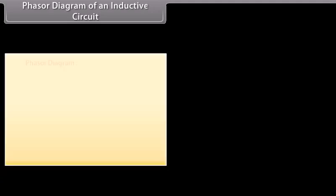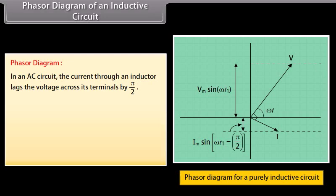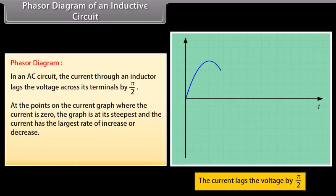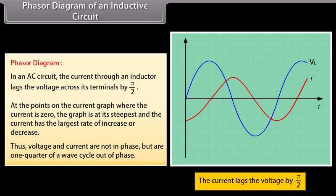Phasor diagram of an inductive circuit: In an AC circuit, the current through an inductor lags the voltage across its terminals by π/2. At the points on the current graph where the current is zero, the graph is at its steepest and the current has the largest rate of increase or decrease. Thus, voltage and current are not in phase but are one quarter of a wave cycle out of phase.